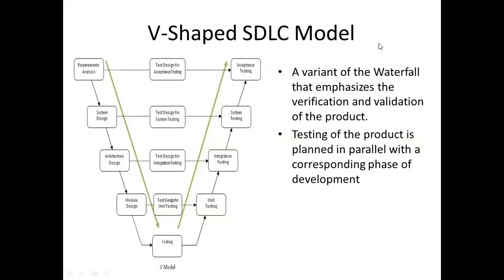In this class we are going to discuss about the V-SDLC model, also simply called the V model. It is named the V model because it really looks like a V shape. Unlike the waterfall model, which is a sequential model, in the V shape model the testing and development activities happen in parallel — that is the key importance of the V model.